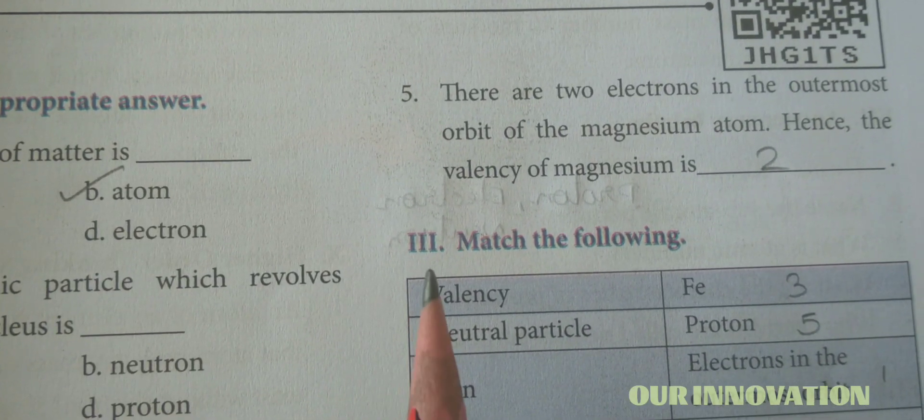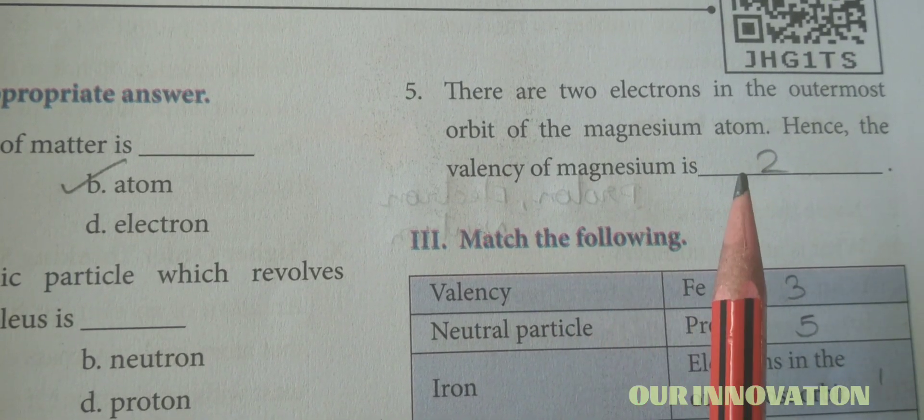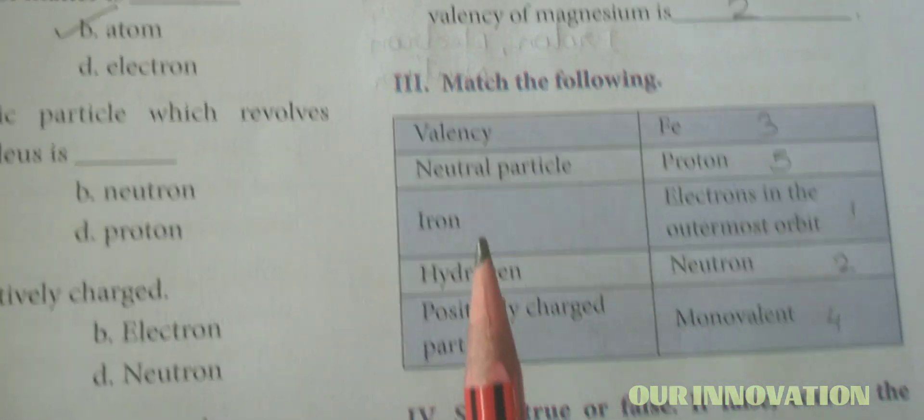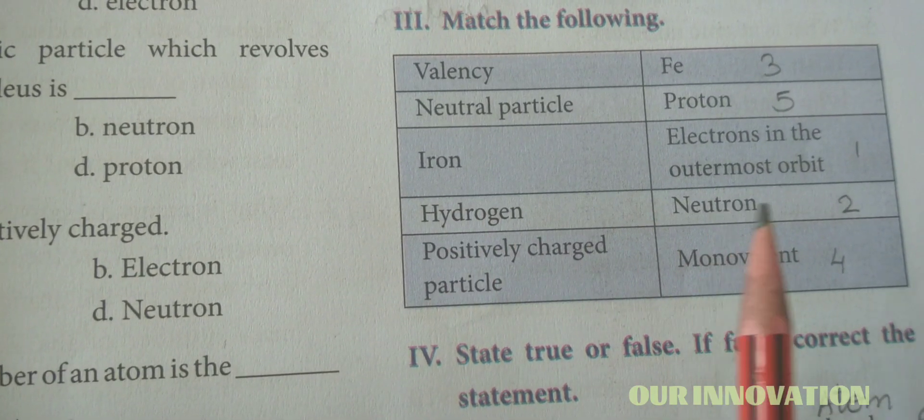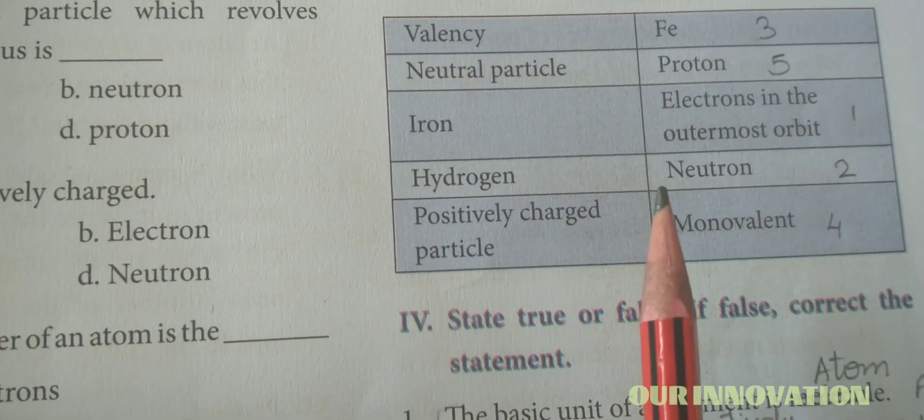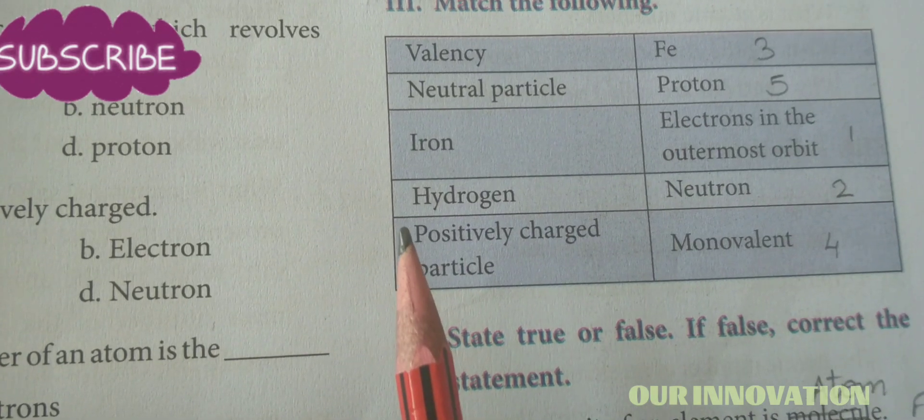There are two electrons in the outermost orbit of the magnesium atom, hence the valency of magnesium is 2. Now, valency electrons in the outermost orbit, neutral particle is neutron, iron is Fe, hydrogen is monovalent, positively charged particle is proton.